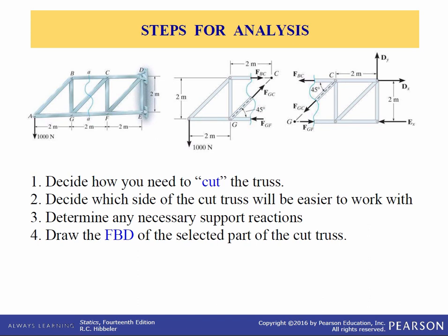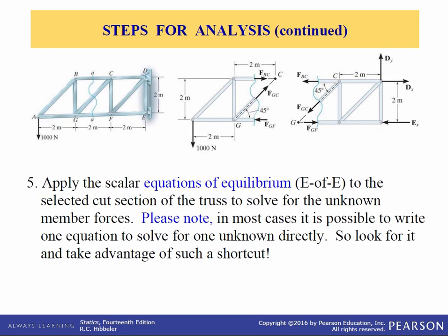Let's establish a procedure for analysis. First, make a decision on how to cut or section the truss through the members where forces are to be determined. Before isolating the appropriate section, it may first be necessary to determine the truss's support reactions. If this is done, then the three equilibrium equations will be available to solve for member forces. Draw the free body diagram of that segment which has the least number of forces acting on it. Then apply the scalar equations of equilibrium to the selected cut section to solve for the unknown member forces. A lot of times it's possible to write one equation to solve for one unknown directly, so look for that shortcut.